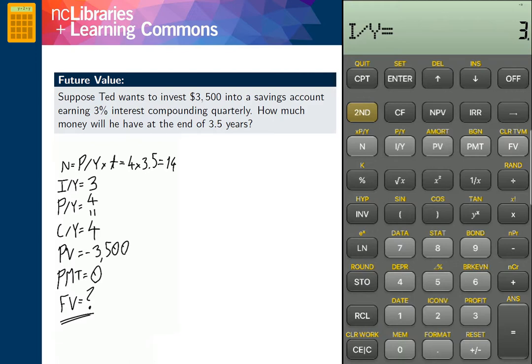We will enter PY by pressing 2nd function and IY. We will enter 4, and here we have to press the Enter button. And scroll down to find CY. To exit this section, we will hit Clear Work.